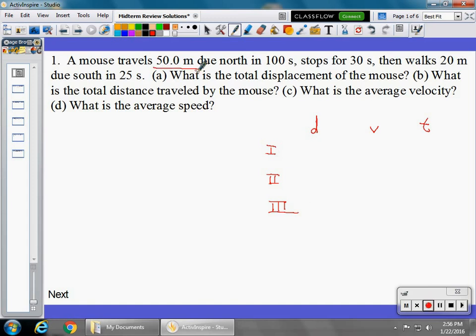The mouse goes 50 meters in the problem in 100 seconds. And in this case, it's going north, so that's positive. We call north positive. So that's 50 meters in 100 seconds.